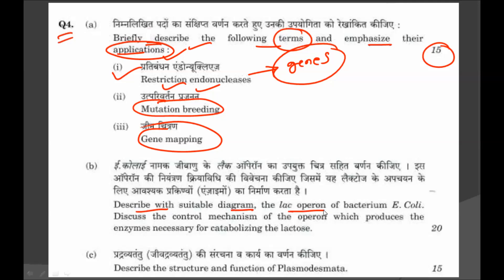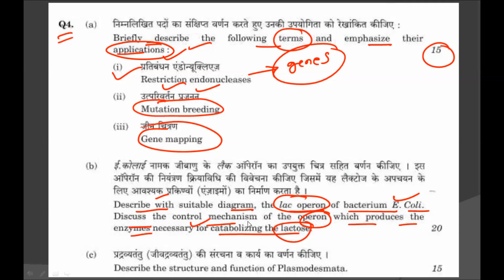Then describe with a suitable diagram the lac operon of bacterium E. coli, and discuss the control mechanism of the operon which produces the enzymes necessary for catabolizing lactose. You have to give the suitable diagram and describe the control mechanism, for 20 marks. Then describe the structure and function of plasmodesmata — a simple question everyone is familiar with — for 15 marks.